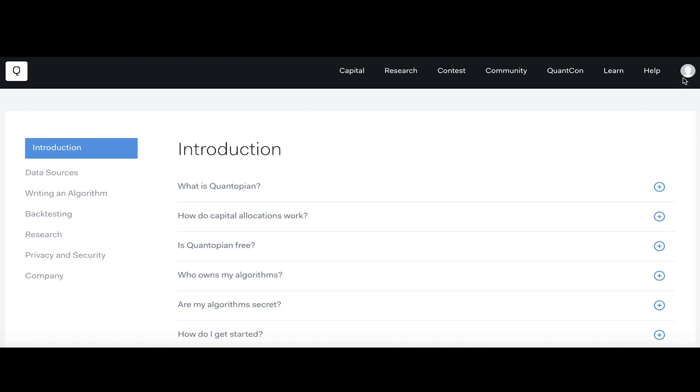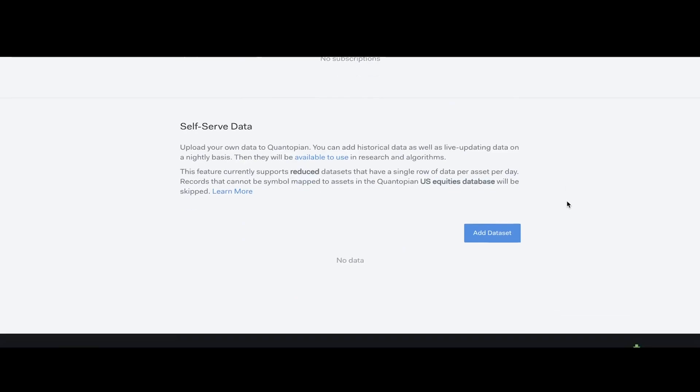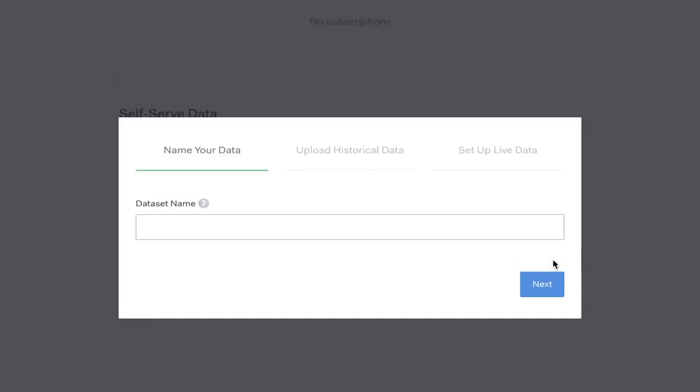To begin uploading your prepared dataset, navigate to the data tab under account settings and select add dataset. Here you'll be asked to name your dataset, upload a historical load, and configure live updates. In this case, I'll name my dataset company contributions dataset fittingly.